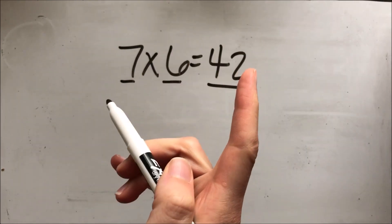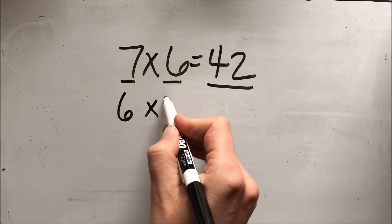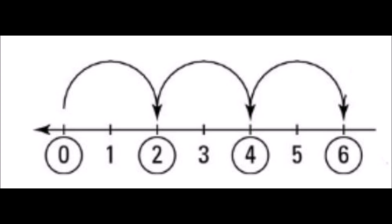On this problem, we're given a number line with equal groups moving forward. I see three hops with two numbers within each group, so this picture is showing two times three equals six, or three times two equals six.